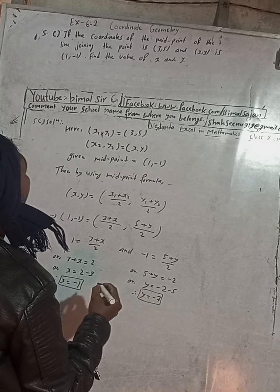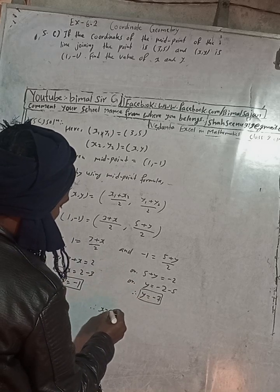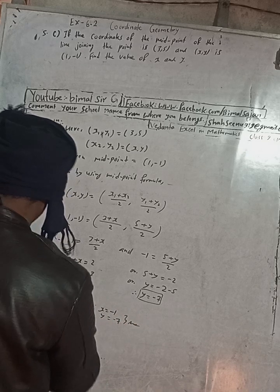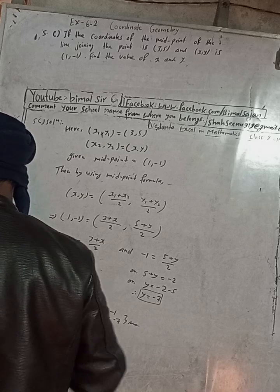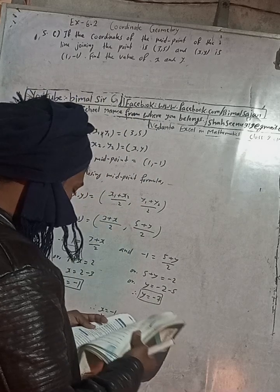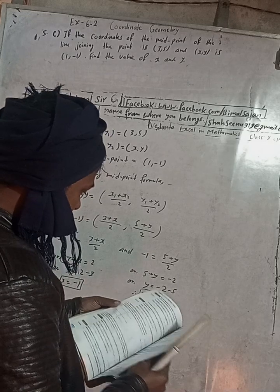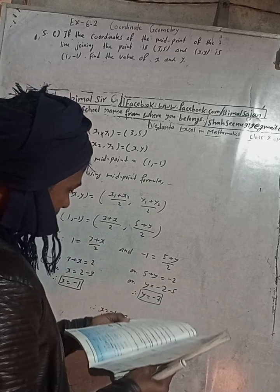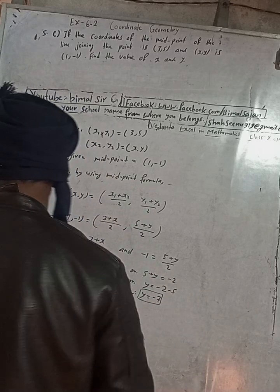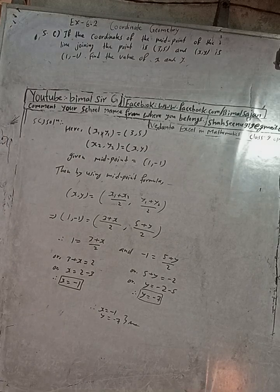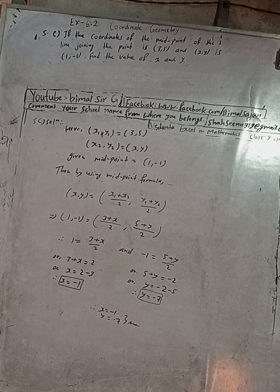Therefore, x is equal to minus 1 and y is equal to minus 7. These are the answers for question 5c. If you like the video, try to share it with your friends.